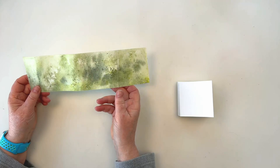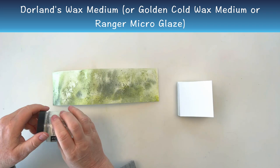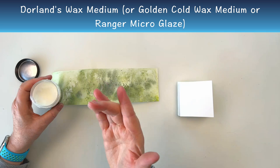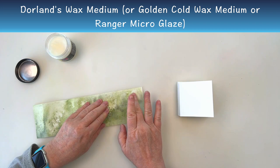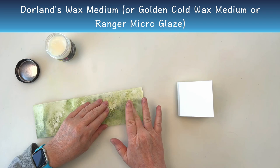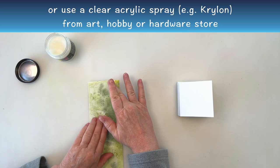This next step is totally optional, but since I live in kind of a wet environment, I like to waterproof my covers a little bit with some Dorland's wax medium. You can buy this in most hobby stores and it's very easy to apply. You just put a little on your finger and rub it into the paper. You can feel where it's going and when you need to get a little bit more and it creates a sort of a waxy surface that will protect the paper from moisture. You could also use a golden cold wax medium or ranger micro glaze. Those are basically the same thing, or you could spray it with an acrylic spray from the hardware store.